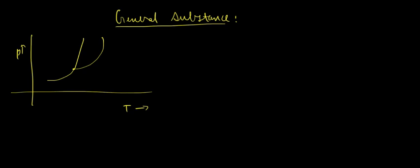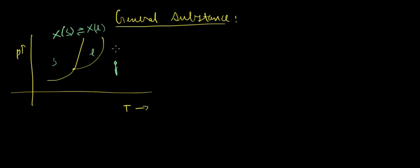This is the solid phase, this is liquid, and this is gaseous. This curve is about substance X converting from solid to liquid, this one is about liquid to gas, and this is about solid to gas.